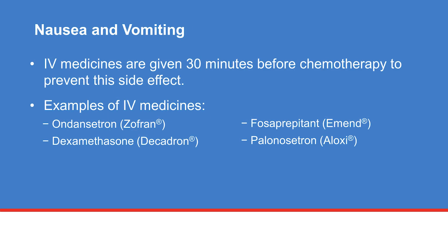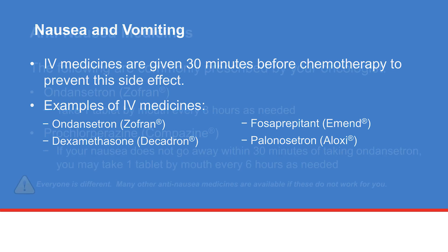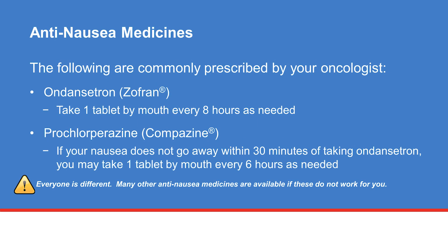Your chemotherapy can potentially cause nausea and/or vomiting. We commonly give IV medicines at the start of each infusion appointment to prevent nausea. Ondansetron and dexamethasone are standard anti-nausea medicines for everyone receiving GA. In case you develop nausea away from the hospital, your oncologist will prescribe medicines like ondansetron or prochlorperazine that you can take by mouth. Only take these nausea medicines if you have nausea.